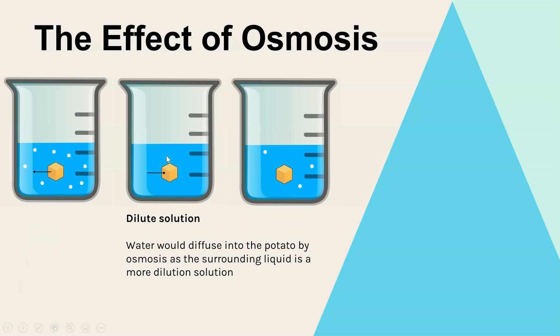The next one that we have is a dilute solution. And this time, that would mean that if we had a really dilute solution, for example, if it was just pure water with nothing else dissolved in it, then the water would move into the potato because inside of the potato, there would be a more concentrated solution. So in that instance, the potato would actually gain mass because water is entering.